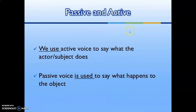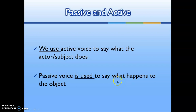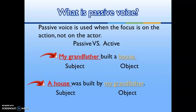Passive and active: we use active voice to say what the actor (subject) does. Passive voice is used to say what happens to the object. What is passive voice? Passive voice is used when the focus is on the action, not on the actor.